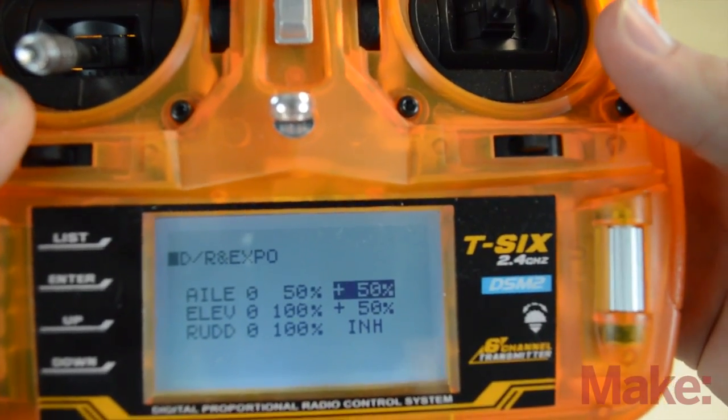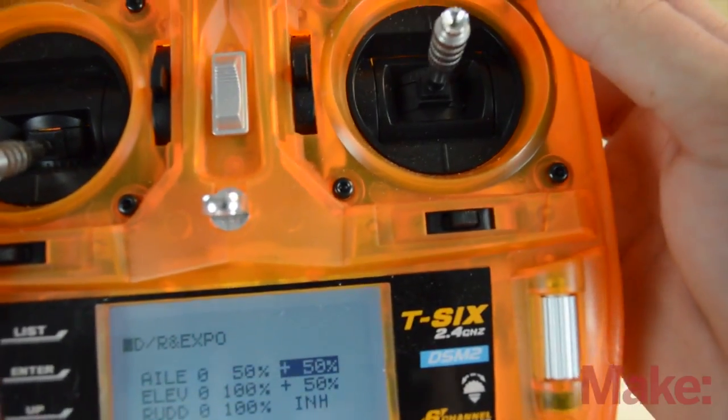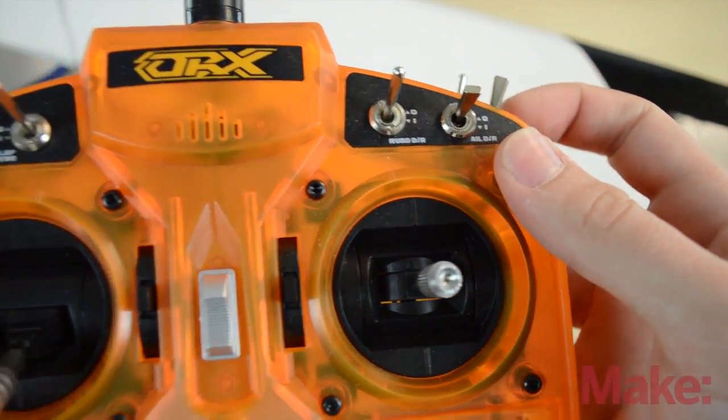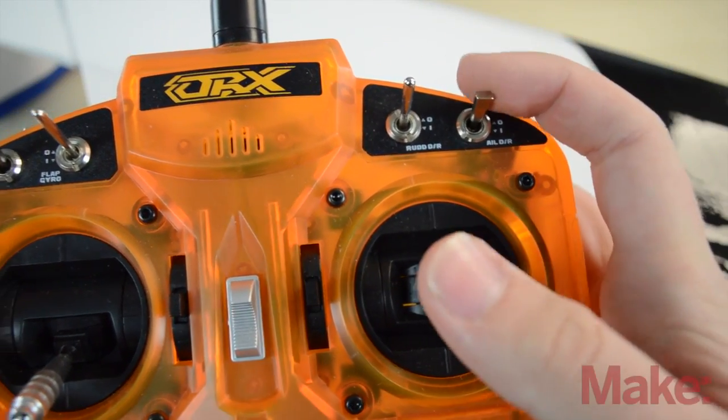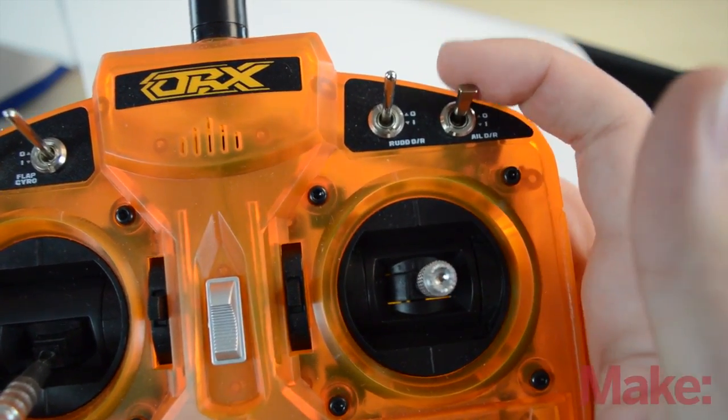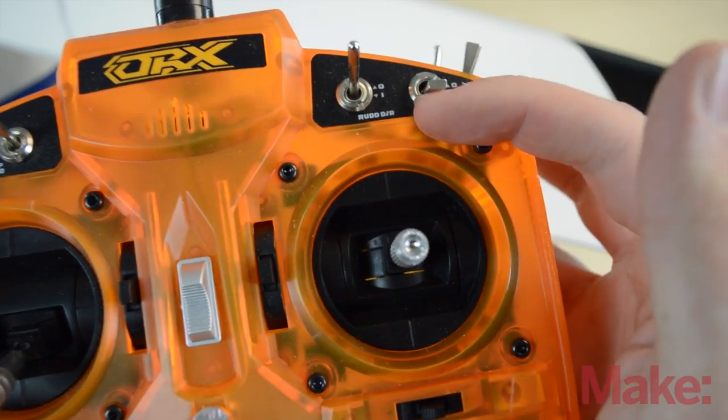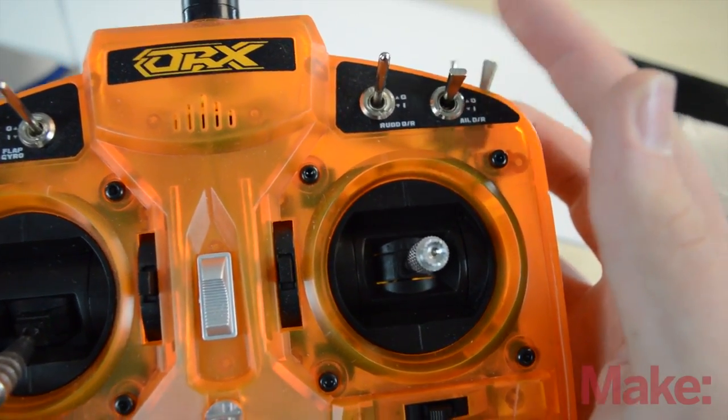Now the dual rates is activated by a switch, and that can be assignable to one of these up here. Now the aileron one is in a unique position because I can hit it really easily when I'm flying. So I want this one to control all three of my dual rates.